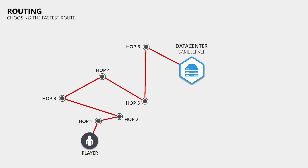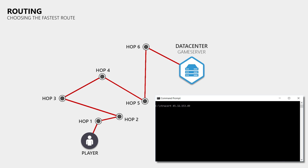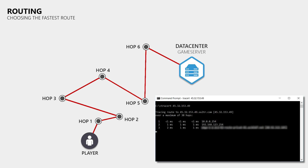So when you always play on the same server and suddenly notice that your ping increased, then this could be caused by the routing. If this is the case, then you have to call your internet service provider so that they can check their routing tables. If you want to help them get the issue fixed faster, then you can open the command prompt, type in tracert and the IP of the game server that you have problems with. You will then get a list of all the hops between you and the game server with the pings between you and every one of those hops. With that information it will be much easier for your ISP to track down the issue and fix it.